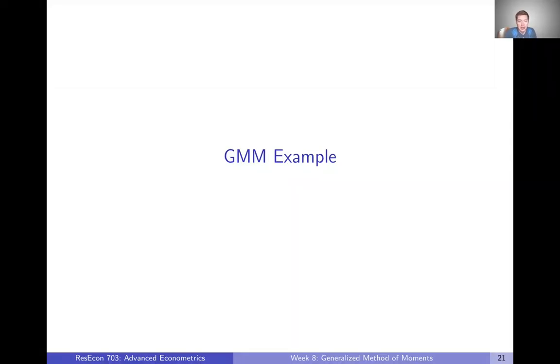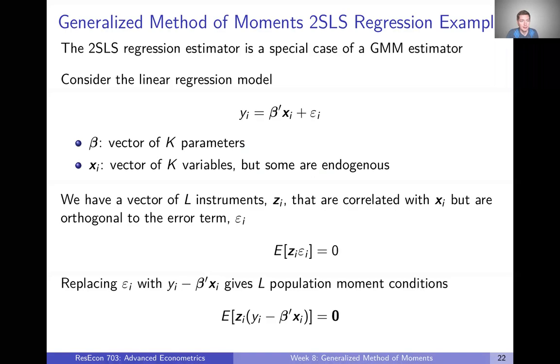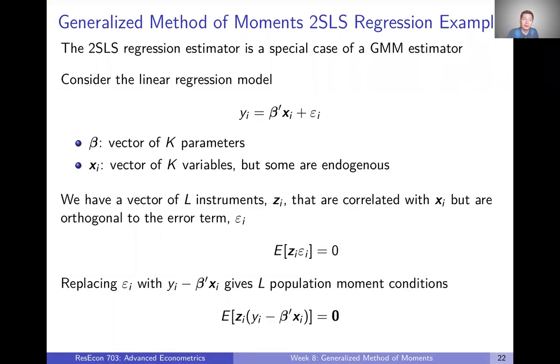So we just defined the GMM estimator in the last video, and now let's take a look at an example of applying the GMM estimator. In this case, we're going to look at a two-stage least squares regression, because it turns out that the two-stage least squares regression estimator is actually a special case of the GMM estimator.